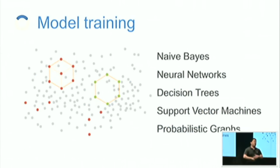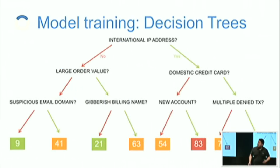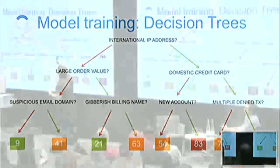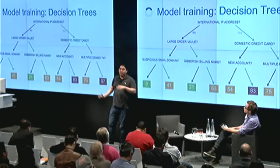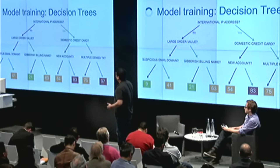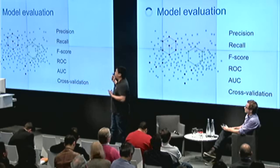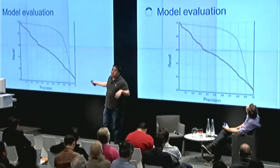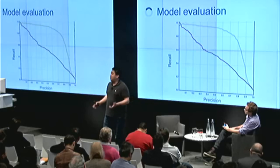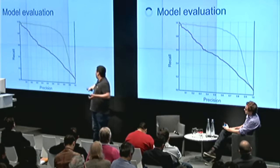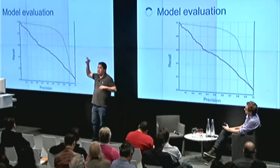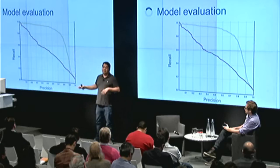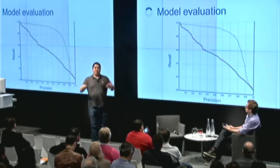In terms of training your models, there are a bunch of different algorithms. Let's look at a decision tree — one of the more human-readable types of ML models. You start with a question like: is it an international IP address? Yes. Is it a domestic credit card? Yes. Are there multiple denied transactions? Yes — high fraud score. You're able to map out this route and visualize and debug it. To know whether your model works, we talked about precision and recall. A precision-over-recall graph is one of the easier visualizations: if your ML system is perfect, the curve goes up and to the right — 100% precision, 100% recall. This shows an example of some model tweaks we made where we got the curve going up and to the right. When applying your model, you also need to avoid overfitting — making assumptions based on a limited set of data that aren't generalizable.